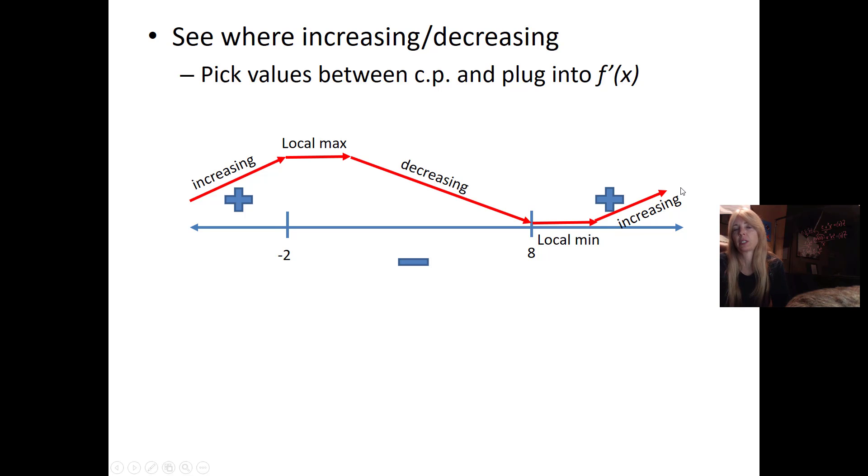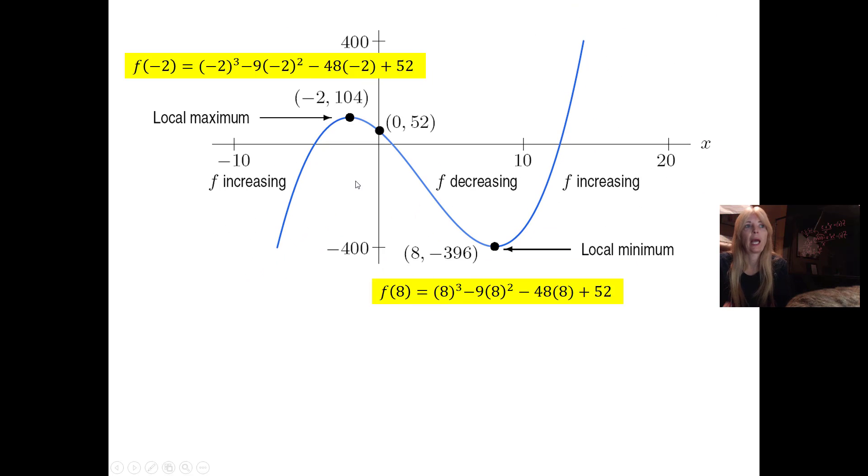So it looks like the function is going up, it hits zero, and then it's coming down. I plug in something into this last interval. I plug in nine because that's bigger than eight, and I get a positive value. I kind of just draw this with arrows and I can see it's increasing, the derivative equals zero, so flat slope, horizontal slope.